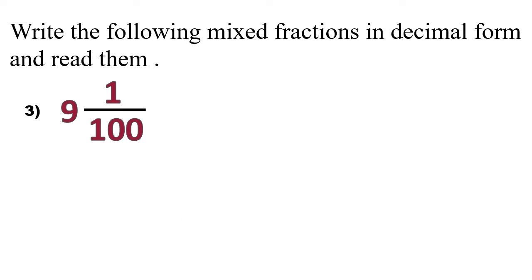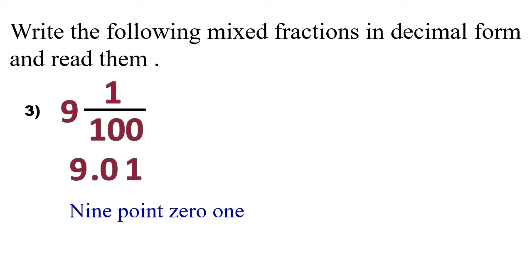Let's see one more example: 9 and 1 upon 100. We are going to write 1. If there is no number in the place of tens, we write zero. In the denominator there are two zeros, so we add one zero before the 1 and then place the 9 as the whole part. The answer is 9.01.